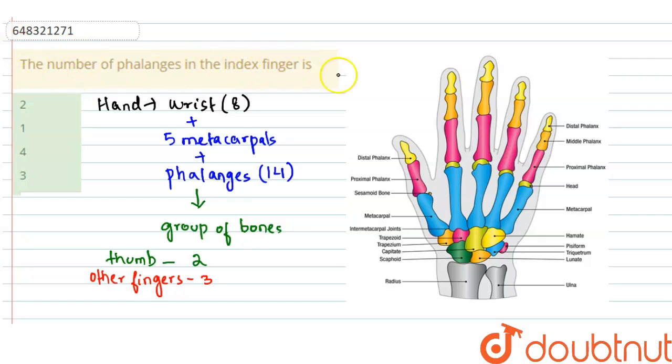Here it is asked about the index finger. Obviously it will have three phalanges. Three will be the correct answer, and the rest of the numbers won't be correct.